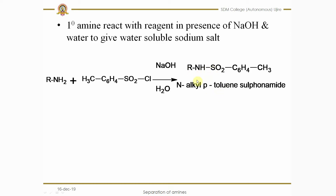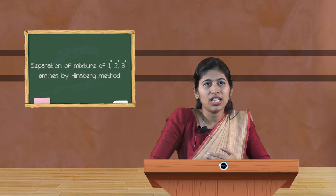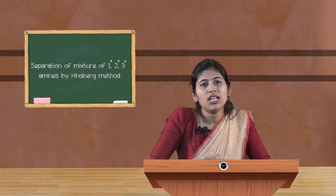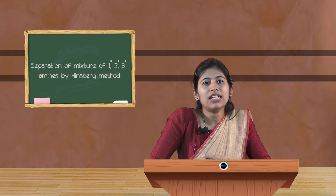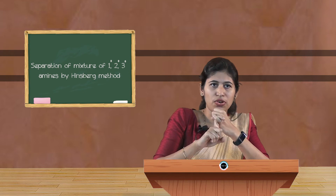As a result, we get N-alkyl para-toluenesulfonamide. Since there is one more hydrogen available, it also reacts with sodium hydroxide, giving a water-soluble sodium salt. So the primary amine product is a water-soluble sodium salt of N-alkyl para-toluenesulfonamide.